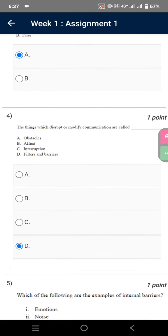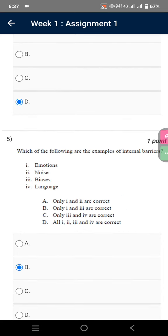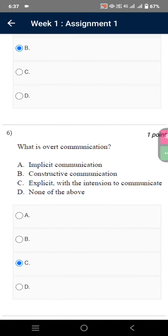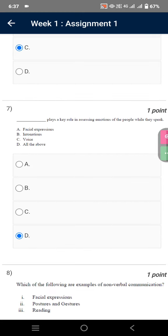The things which disrupt or modify communication are called filters and barriers. Which of the following are examples of internal barriers? Option B. What is overt communication? Explicit with the intention to communicate.